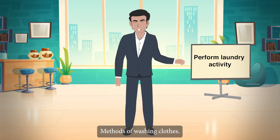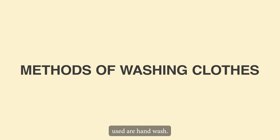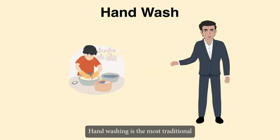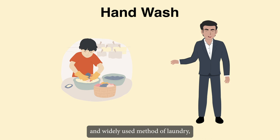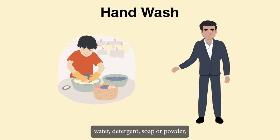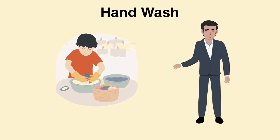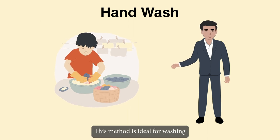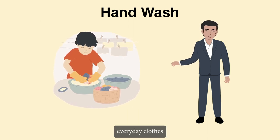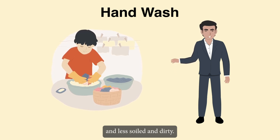Methods of washing clothes. The laundry methods that are commonly used are: Hand wash — hand washing is the most traditional and widely used method of laundry. Water, detergent soap or powder, and a clothes cleaning brush are used. This method is ideal for washing everyday clothes that are lighter in weight and less soiled and dirty.